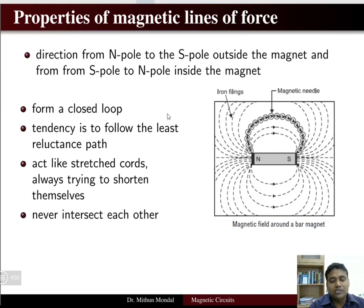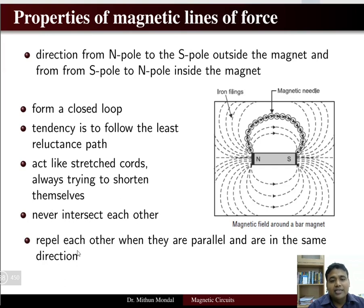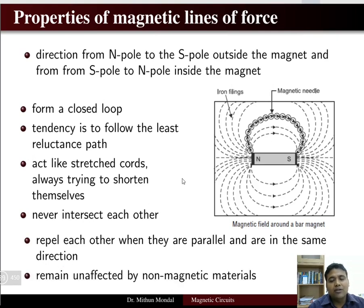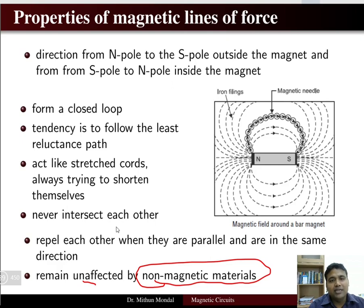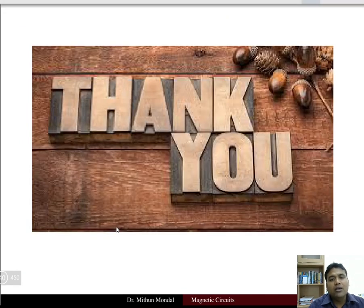Magnetic lines of force never intersect each other. They repel each other when they are parallel and in the same direction. These magnetic lines of force are the fundamentals of any magnetic circuit. They remain unaffected by non-magnetic material — if a non-magnetic material is present in the magnetic field, the magnetic lines of force are not affected by it. This covers the first topic on the magnetic circuit.